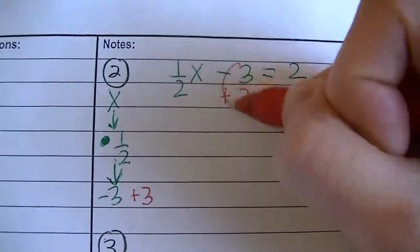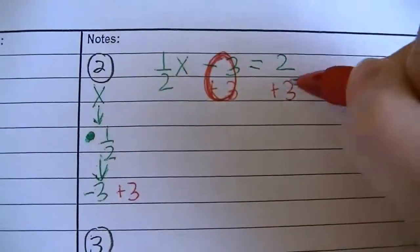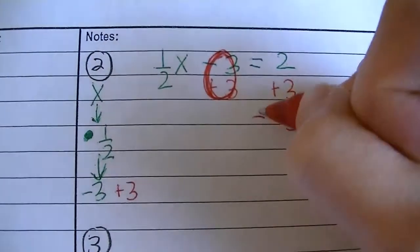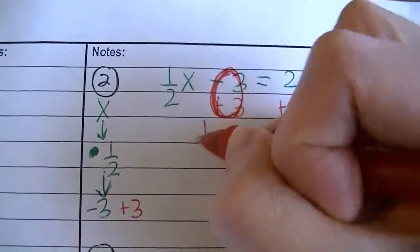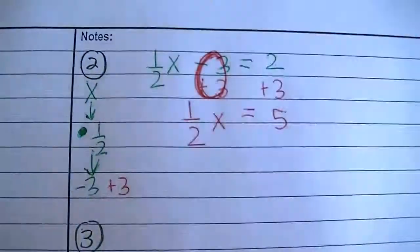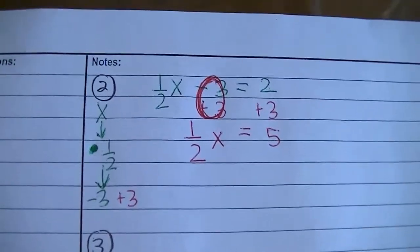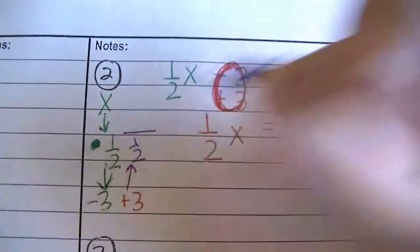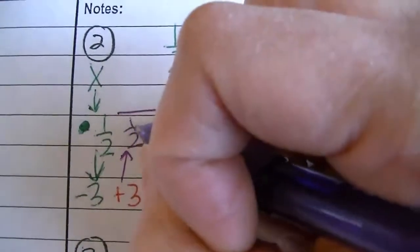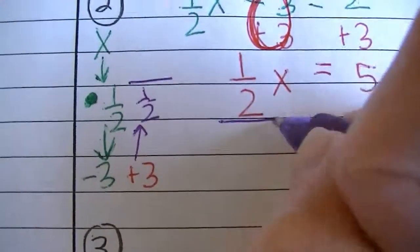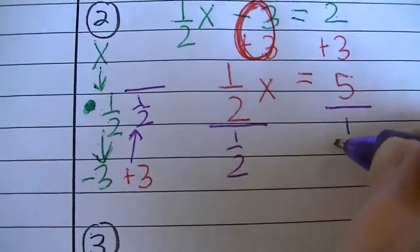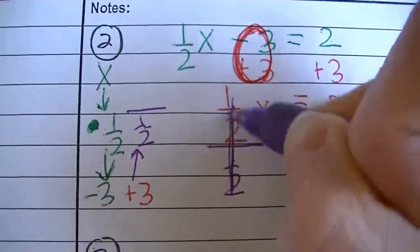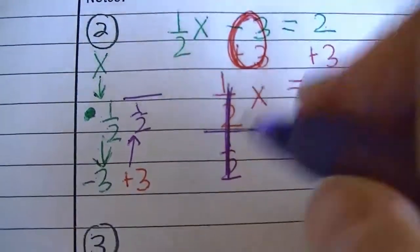Negative 3 plus 3 is 0. 2 plus 3 is 5. Now bring everything down — that equal sign is still there, and that 1 half x is still there. Now we're going to go back up. The inverse operation of multiply by 1 half is to divide by 1 half. So you're going to divide by 1 half on both sides. 1 half divided by 1 half is 1, because any number divided by itself is 1. 1 times x is x.